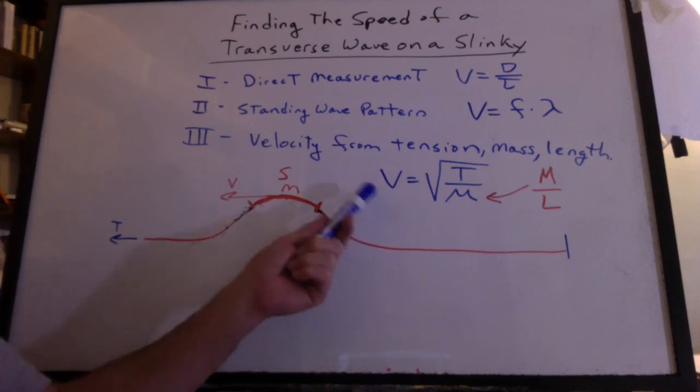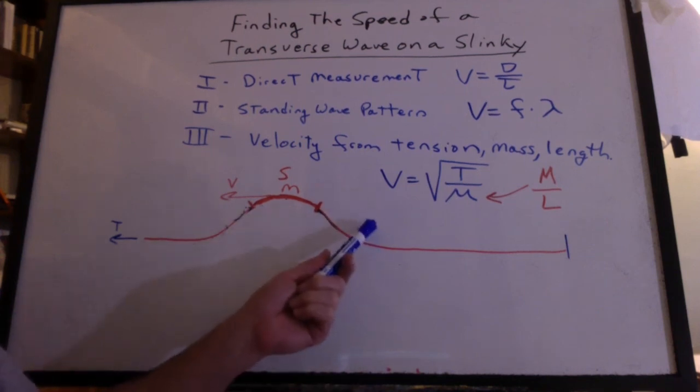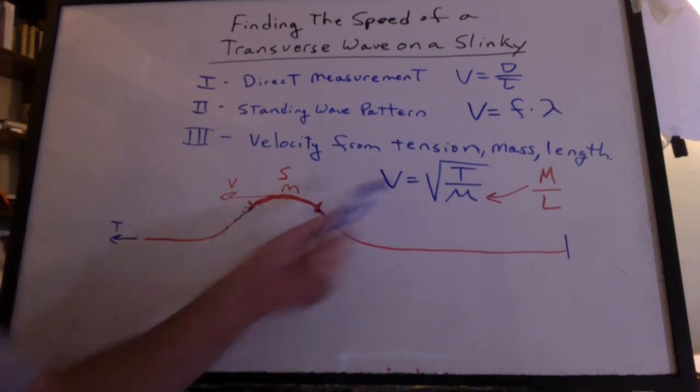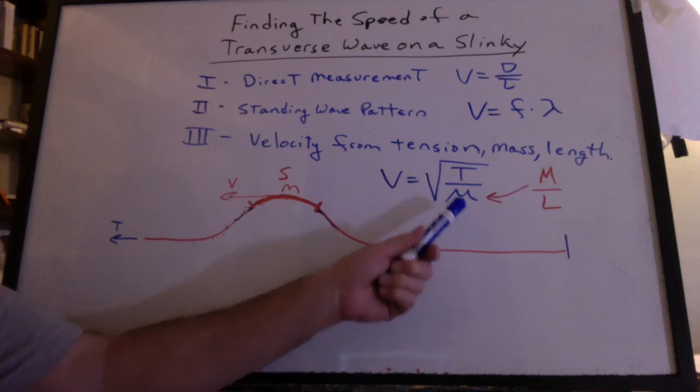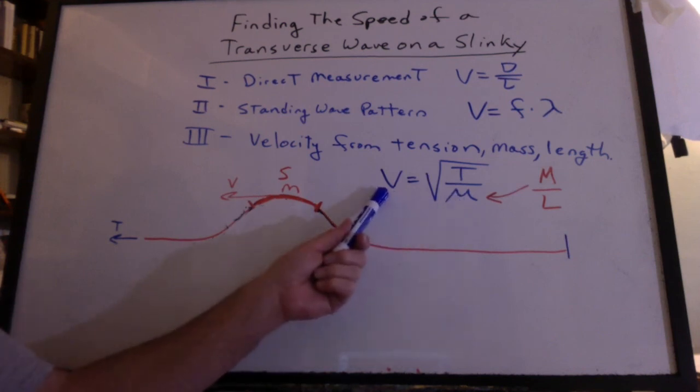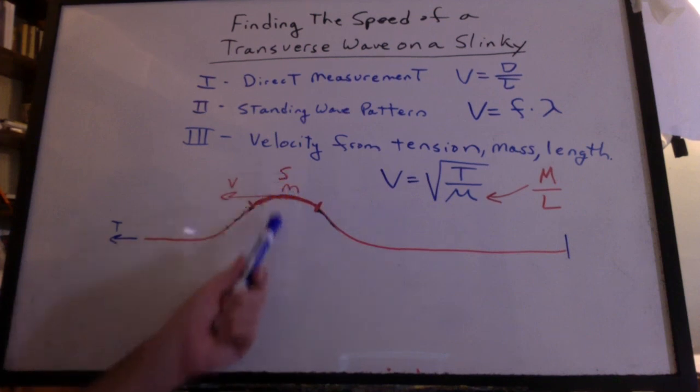Whenever we derive a new formula, we should ask ourselves, does it make any sense? If the tension is increased, that number gets bigger, that gets bigger. Does that work? If we pull tighter, the Y components get bigger, and this will snap down quicker. If we have more mass, it's more inertia, and that should make this thing slower. Bigger mass, harder for it to come down.